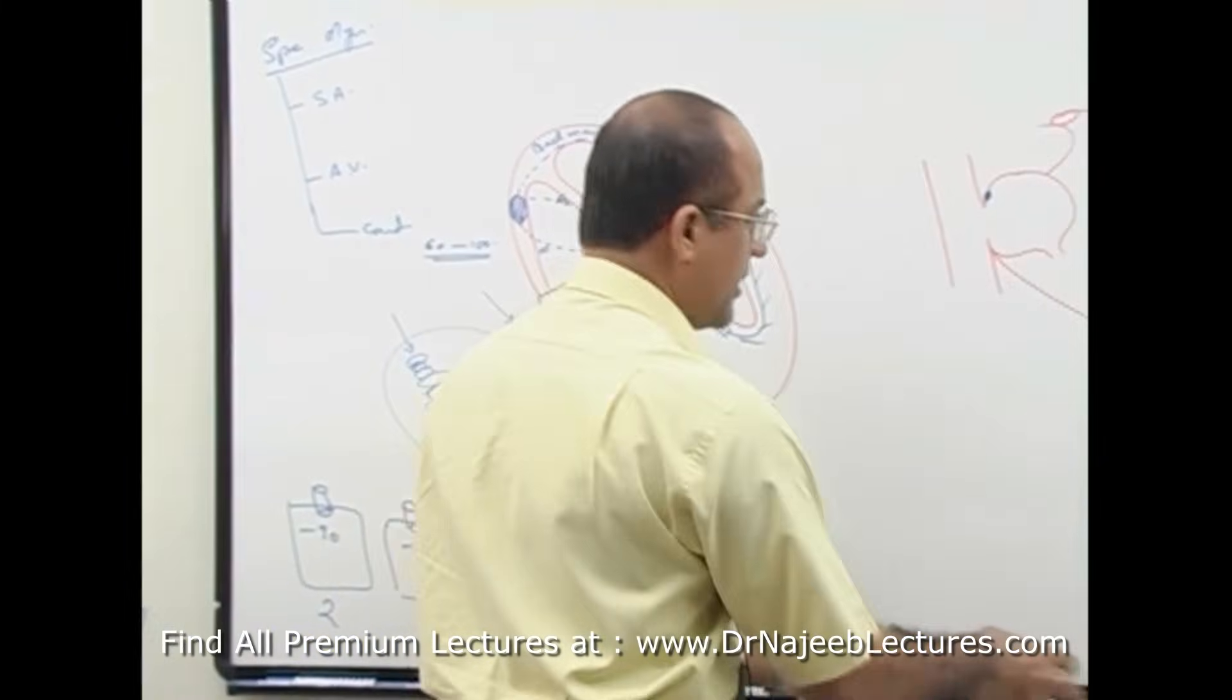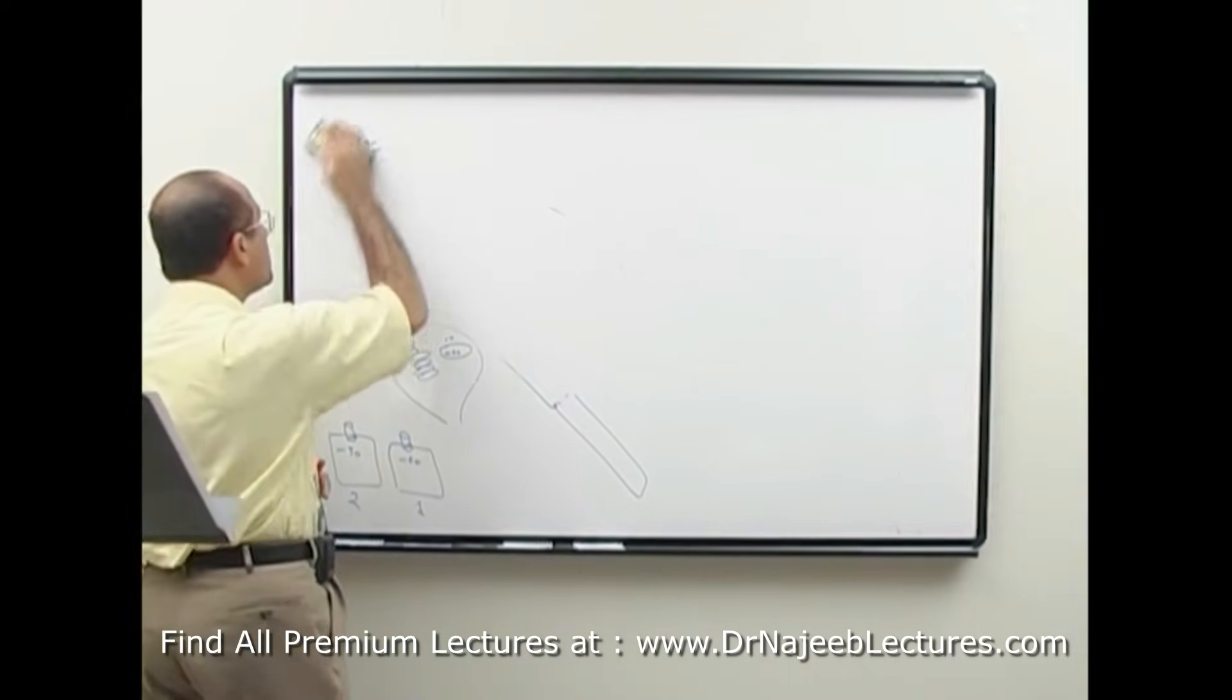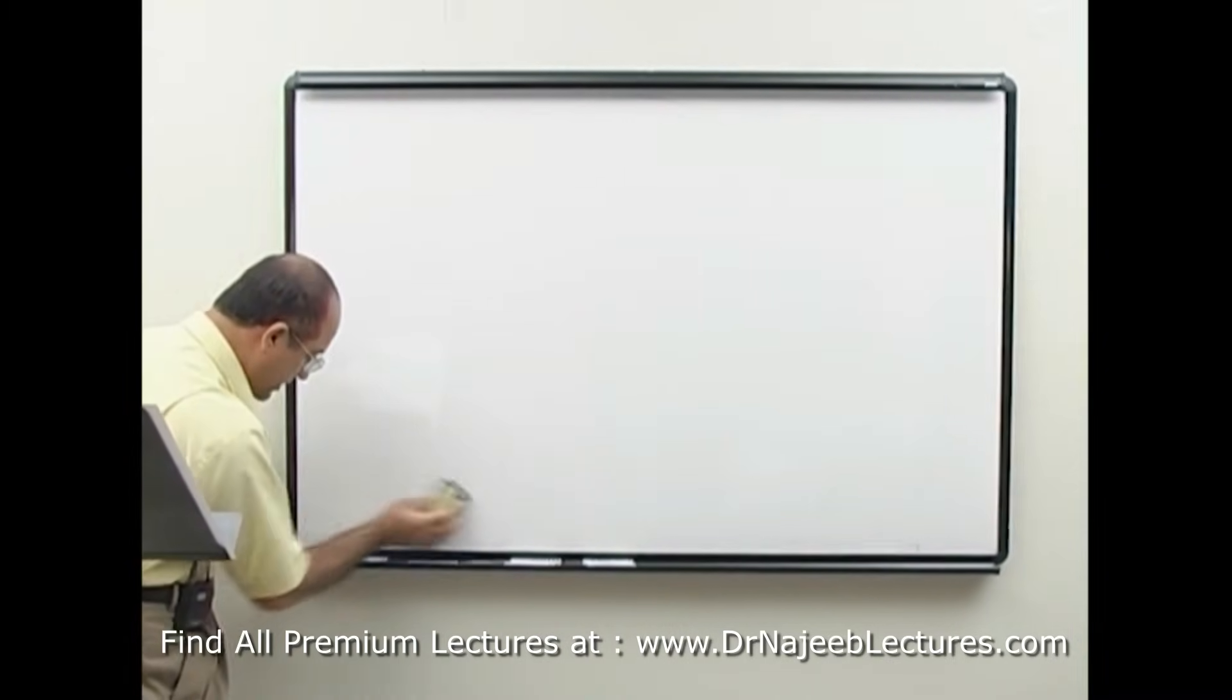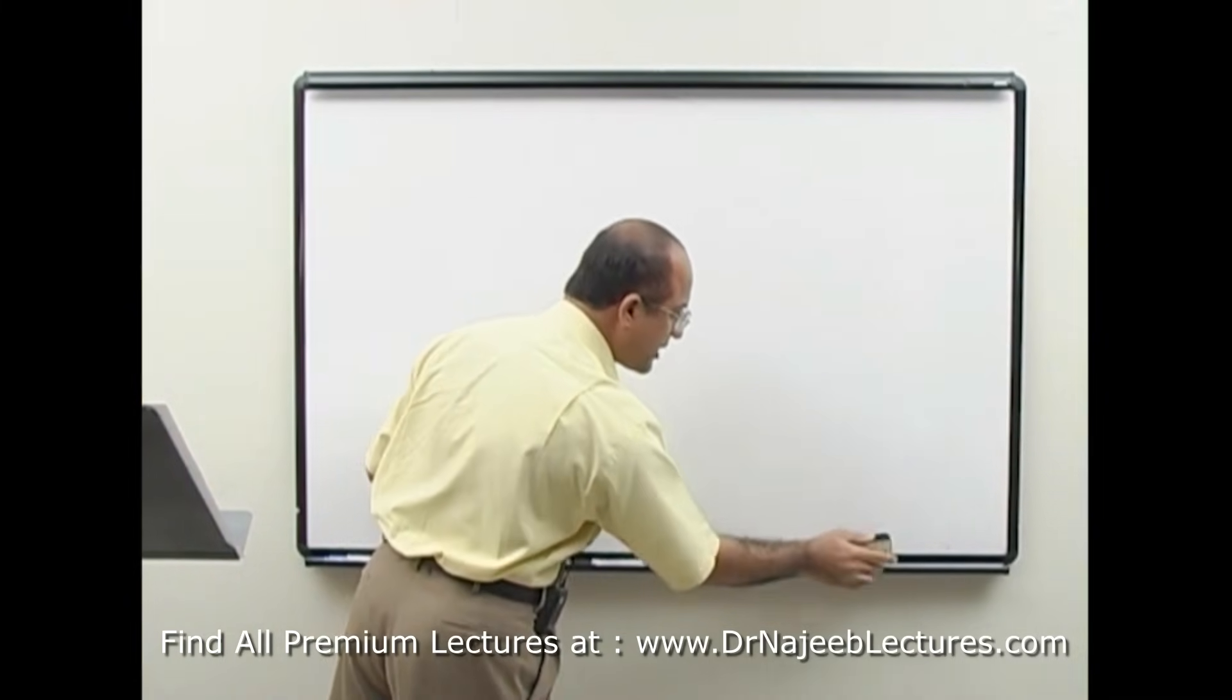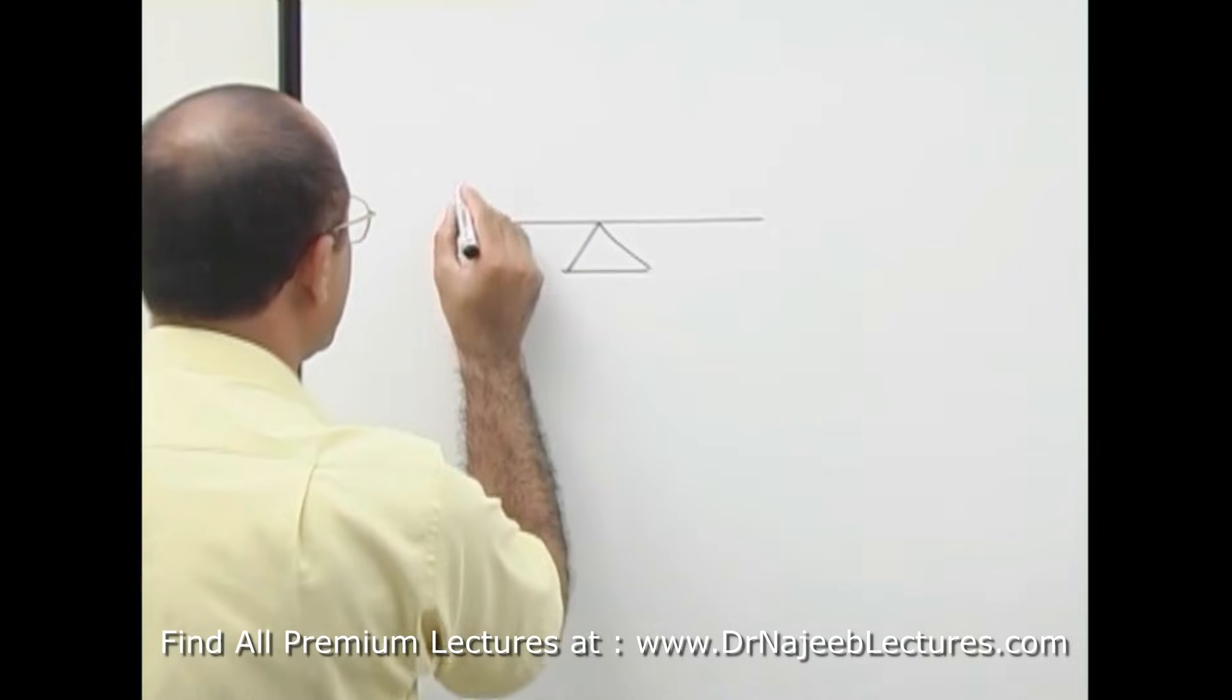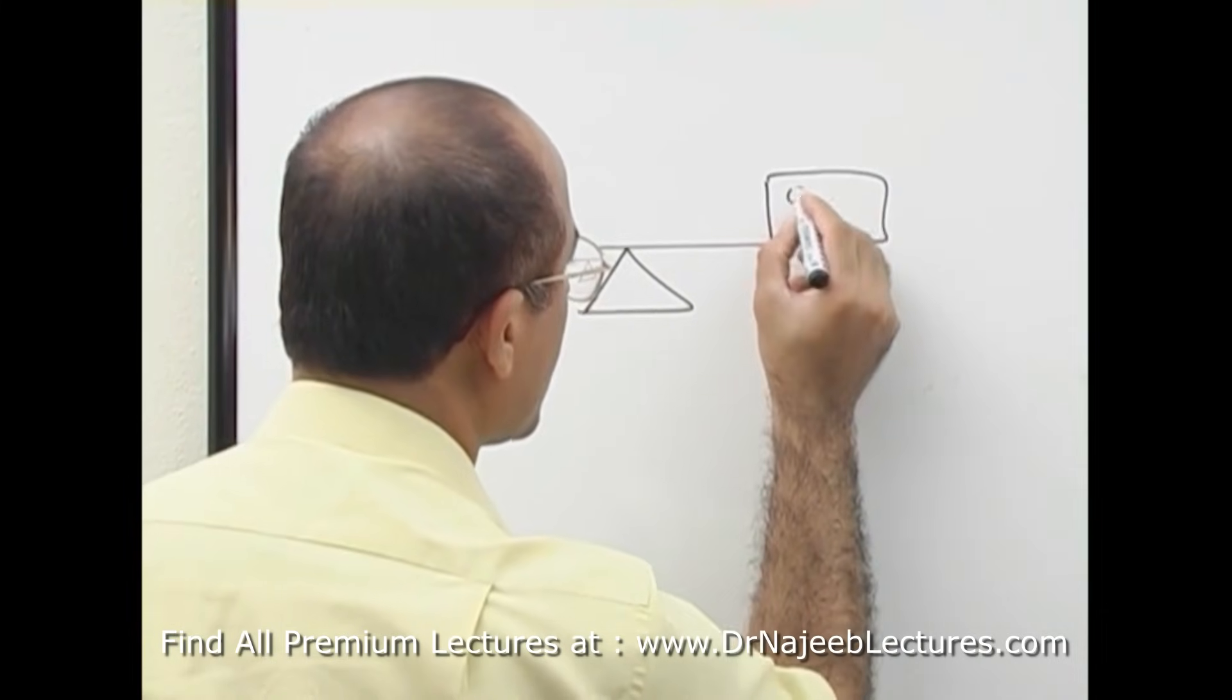A little bit about ischemic heart disease. Myocardium utilizes a lot of oxygen and requires constant supply. If oxygen demand is more and supply is less, myocardium will experience ischemia. In the myocardium there should be perfect balance in oxygen demand and oxygen supply.